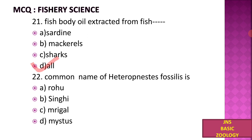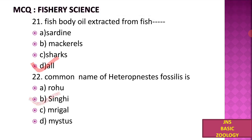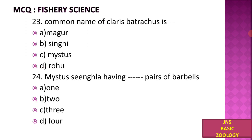Next, what is the common name of the fish species Heteropneustes fossilis? A) Rohu, B) Singhi, C) Mrigal, D) Mystus. The correct option is B — Singhi. Singhi is the common name for Heteropneustes fossilis.